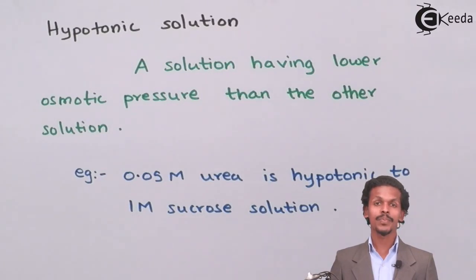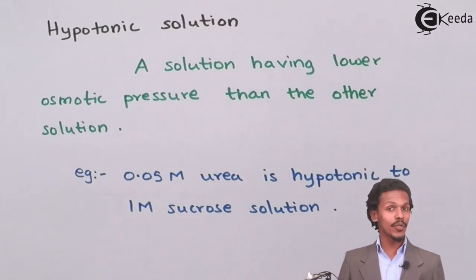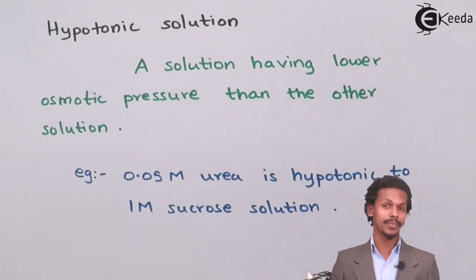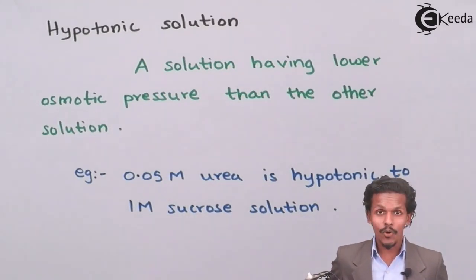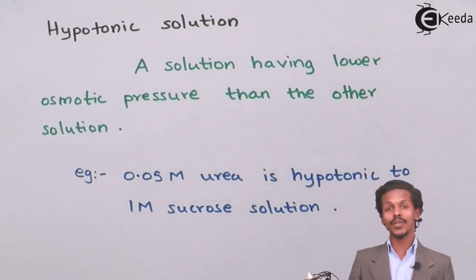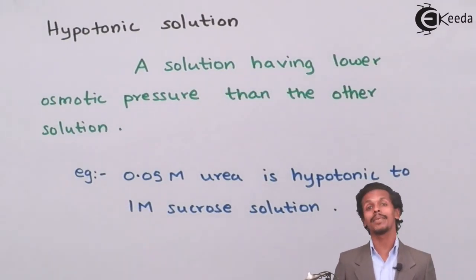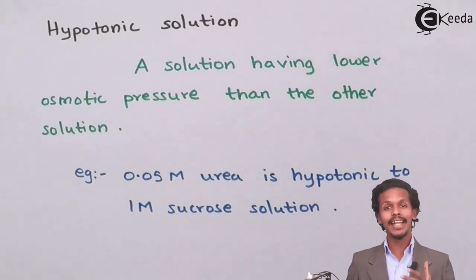These are the three differences among isotonic, hypertonic, and hypotonic solutions. I hope you understood what are the three types of solutions based on osmotic pressure. Thank you for watching this video. Please don't forget to subscribe egna.com and let your friends share this video too.